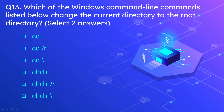Question 13: Which Windows command line commands change the current directory to the root directory? Select two answers. The options are: cd followed by .., cd followed by /r, cd followed by \, change directory followed by .., change directory followed by /r, and change directory followed by \. The correct answers are cd \ and cd /r — both cd and change directory stand for change directory, and you use the backward slash to move from the current directory to the root directory.